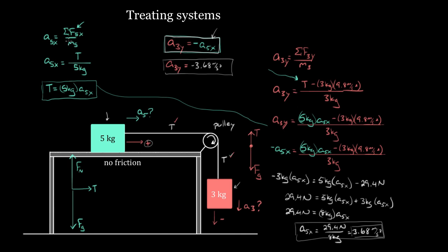Turns out there's a trick. After you solve this problem the hard way with a five kilogram mass and a three kilogram mass, when you find the acceleration, what you get is that the acceleration of the five kilogram mass is just 29.4 divided by eight kilograms. When you do enough of these, you might start realizing: 29.4 Newtons was just the force of gravity pulling on the three kilogram mass — the only external force propelling the whole system forward. And eight kilograms is just five plus three kilograms. Is that a coincidence, or is this telling us something deep and fundamental? It's not a coincidence.